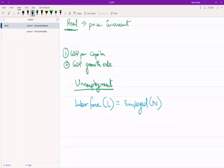Plus the unemployed people. This includes people who do not have a job. So simply, L equals N plus U.